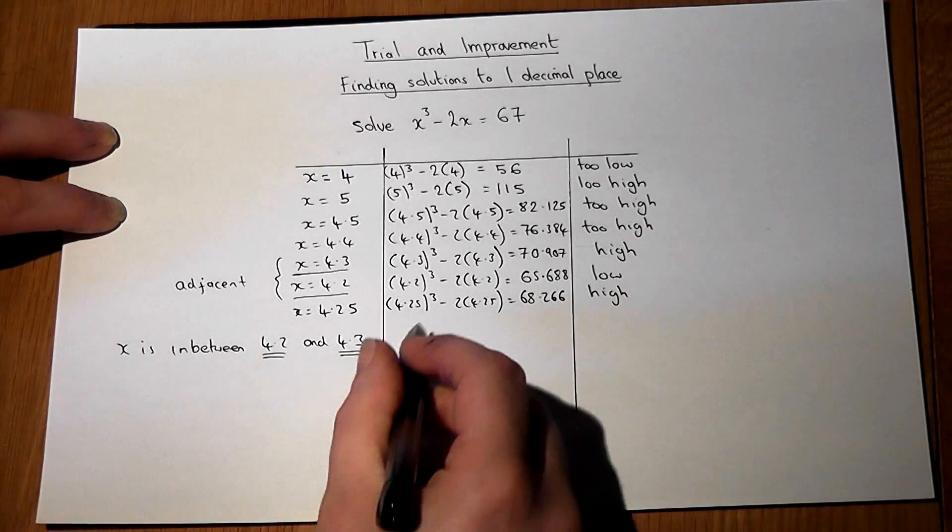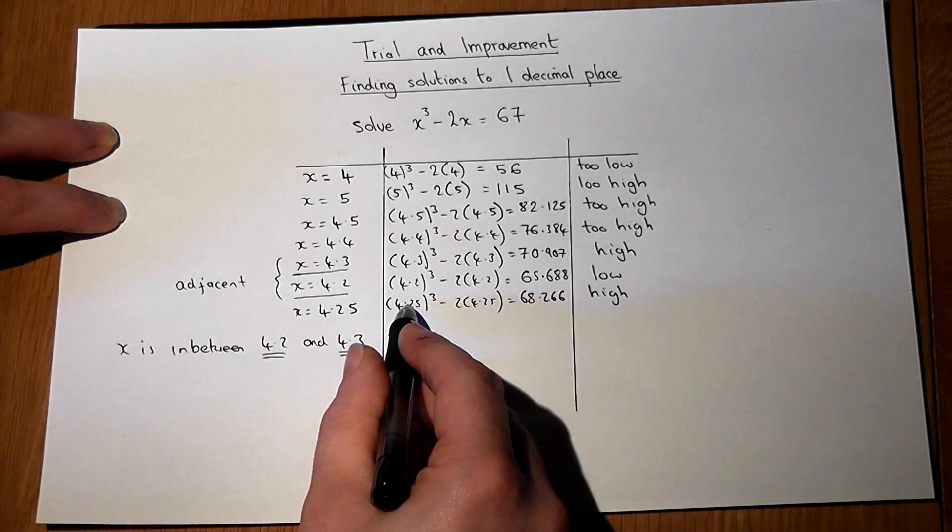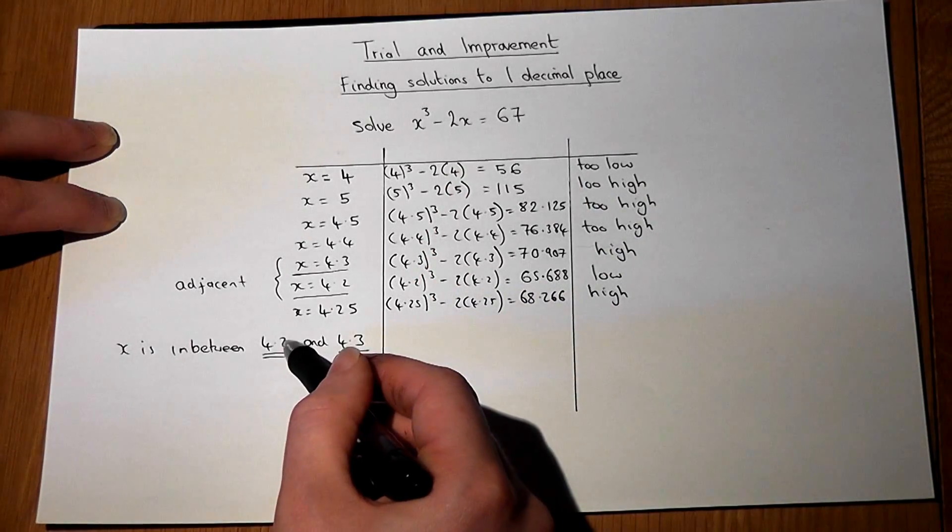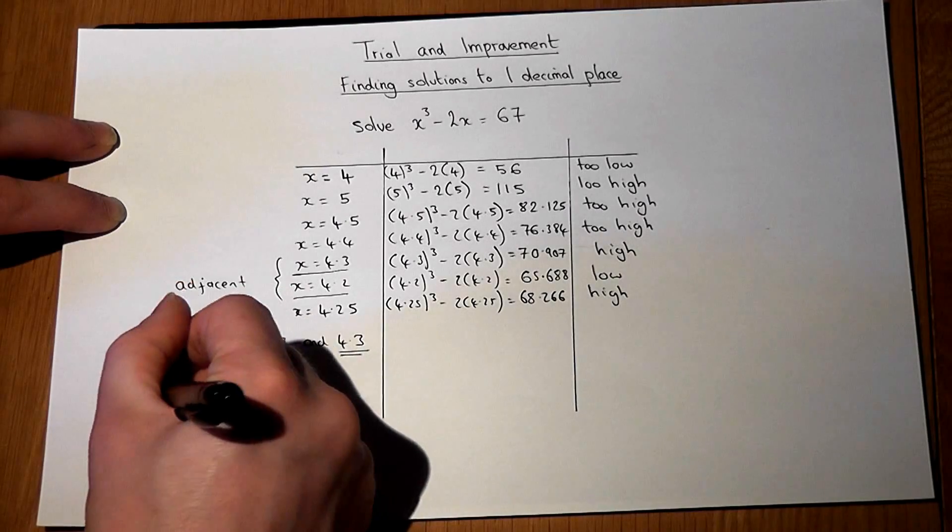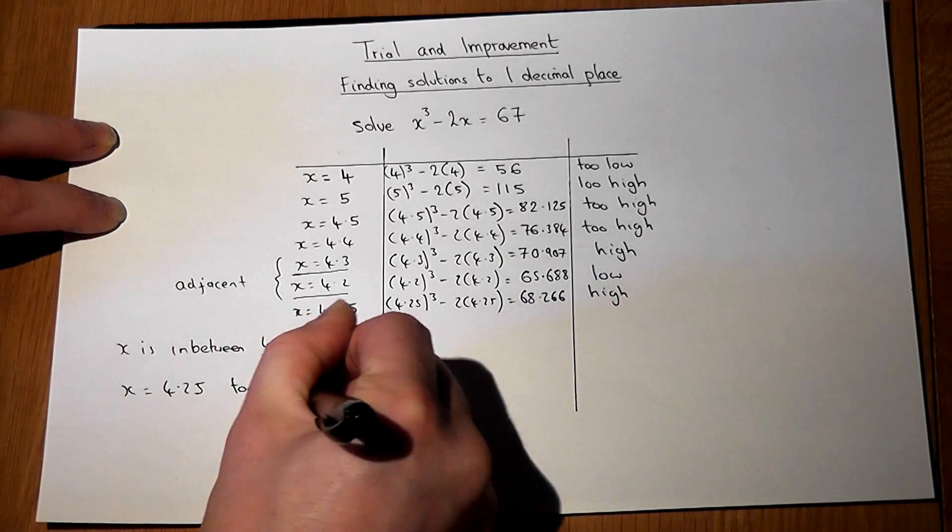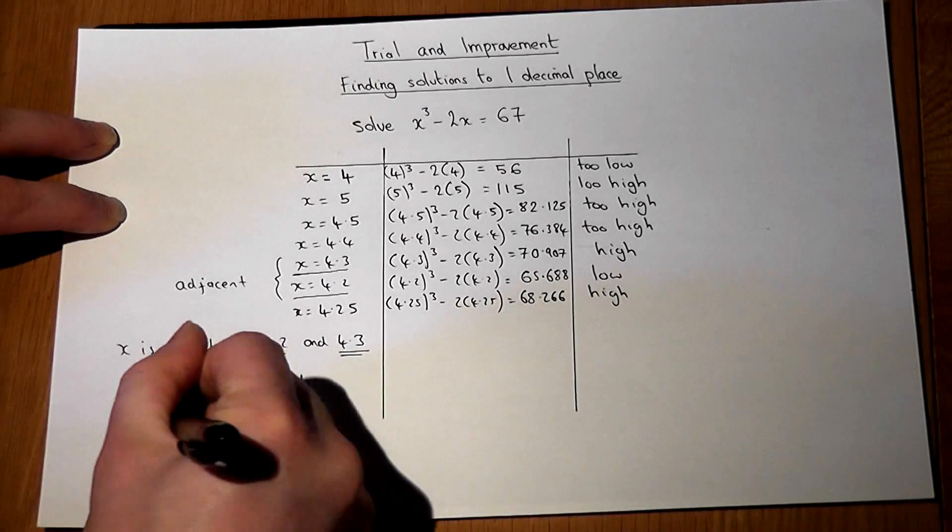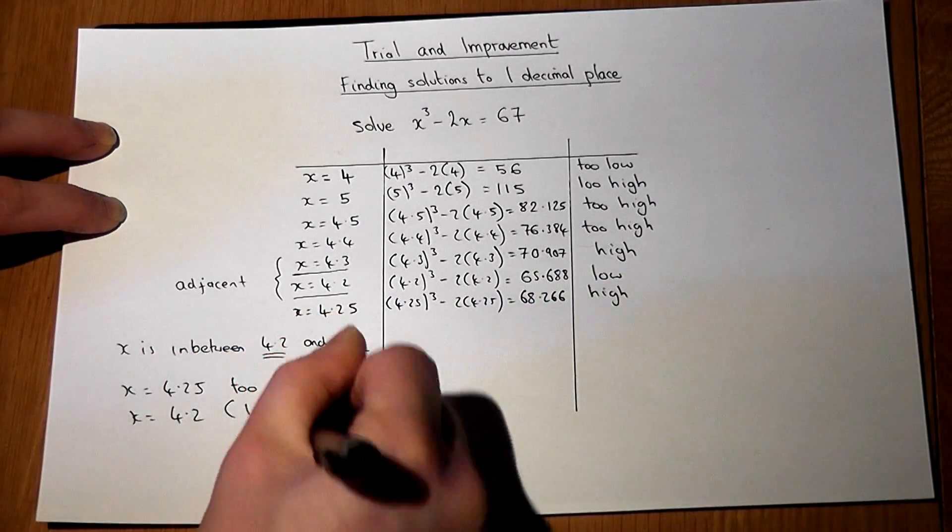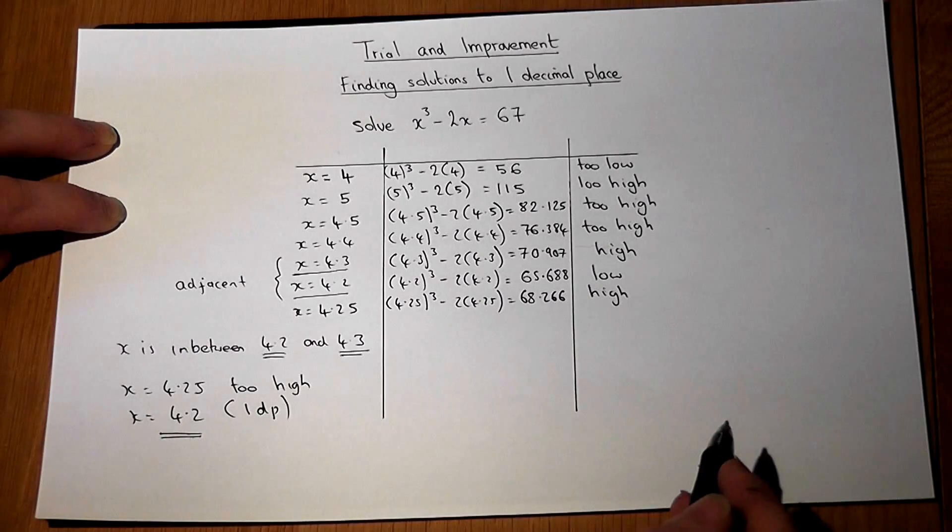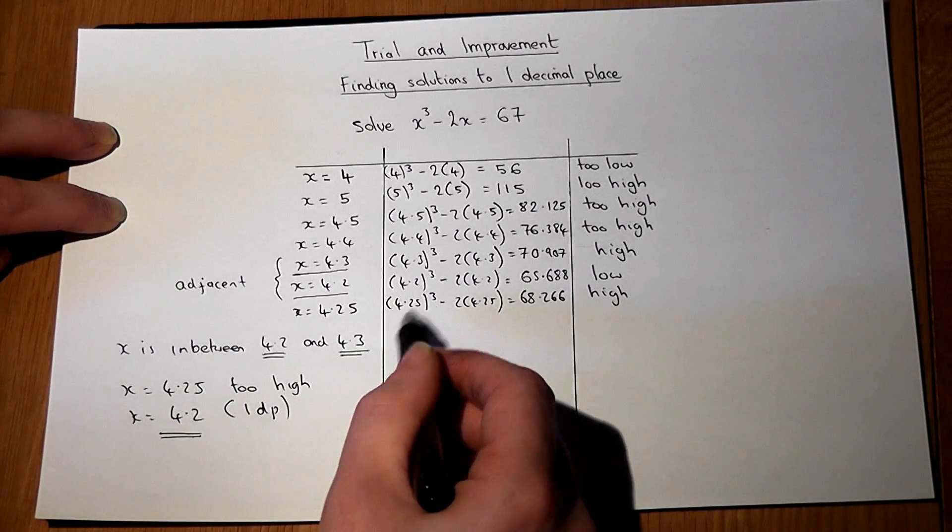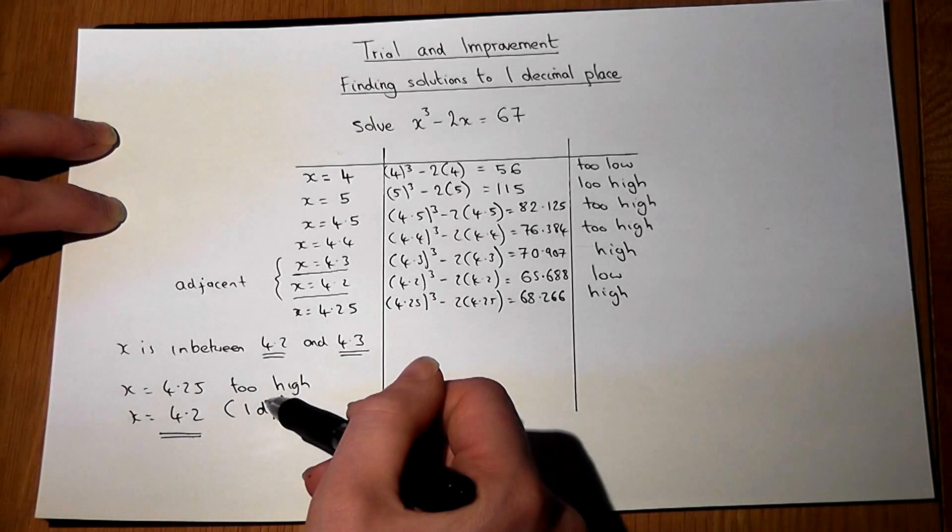So if x equals 4.25 is too high, then it must be 4.2. So x must equal 4.2 to 1 decimal place. If x at 4.25 was too low, then it would be 4.3 to 1 decimal place.